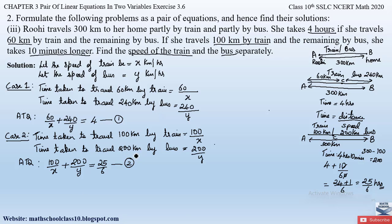We now solve equations 1 and 2. These can be reduced to linear form by substituting: let 1/x = p and 1/y = q. Substituting into equation 1 gives: 60p + 240q = 4, which we call equation 3. The variables p and q are now in the numerator, giving us the standard linear form.